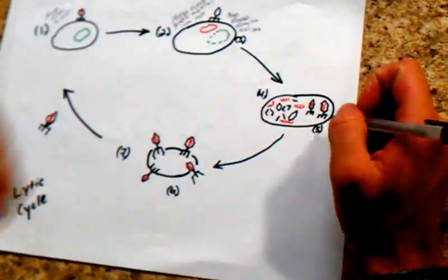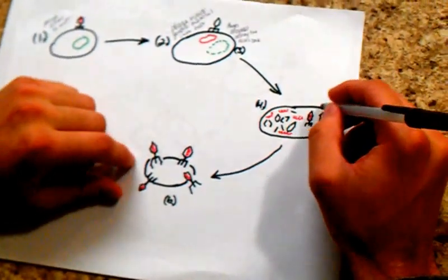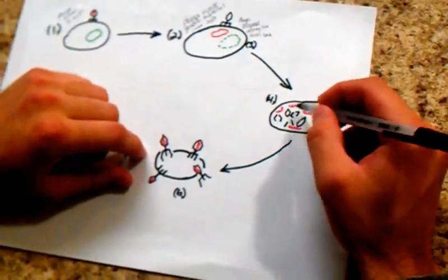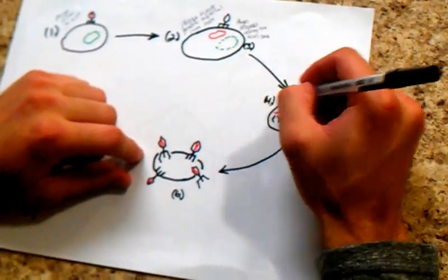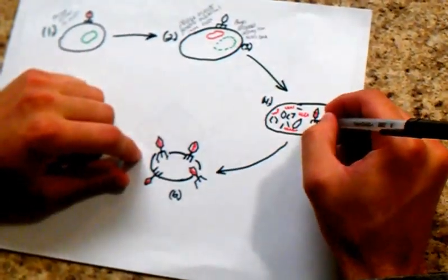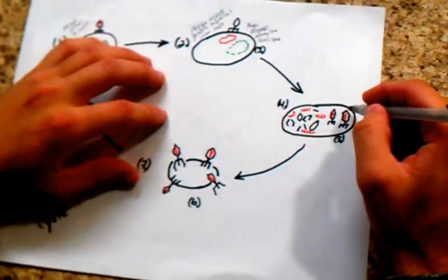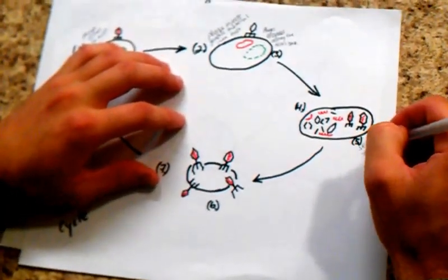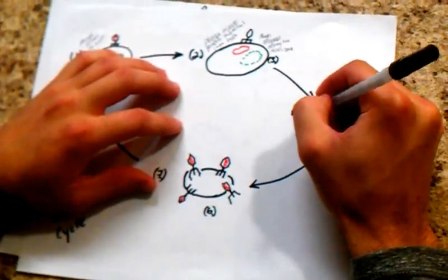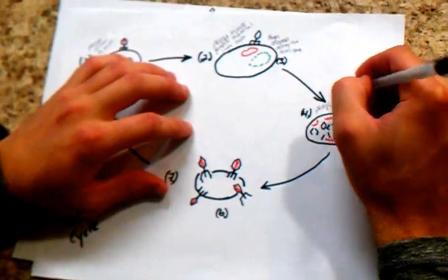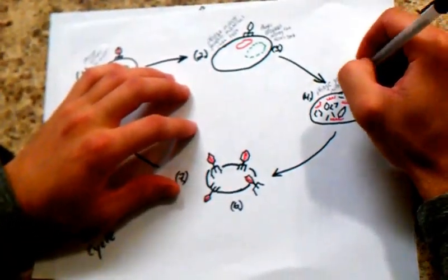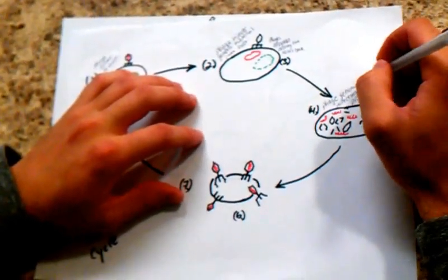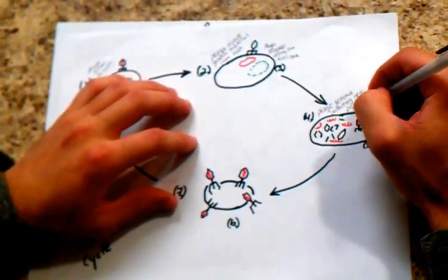The next step, step 4, the phage genome is directing the host to produce its components, and these components are like DNA and proteins. And so what's going to happen after that, it's going to initiate a spontaneous assembly. It's just going to self-assemble here in this phage.